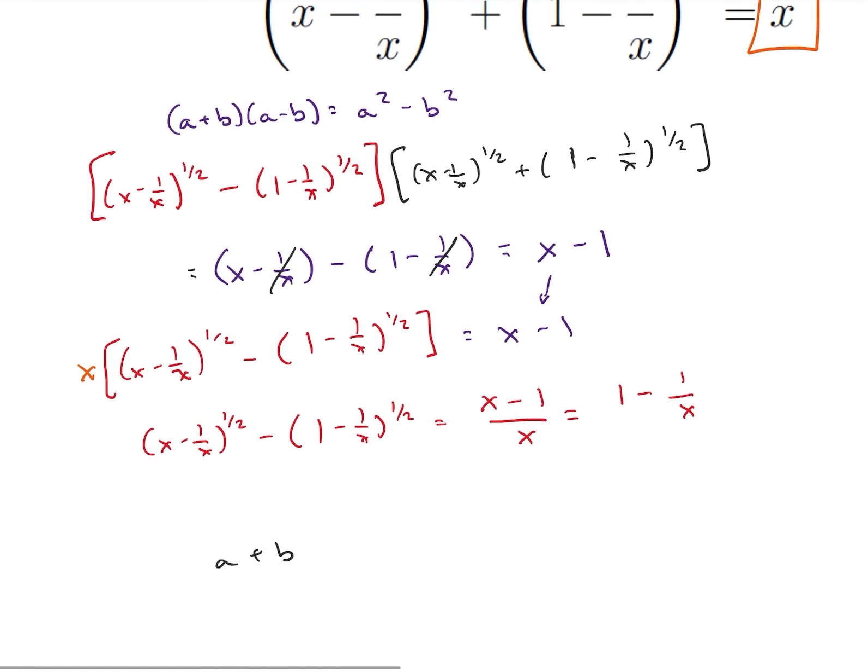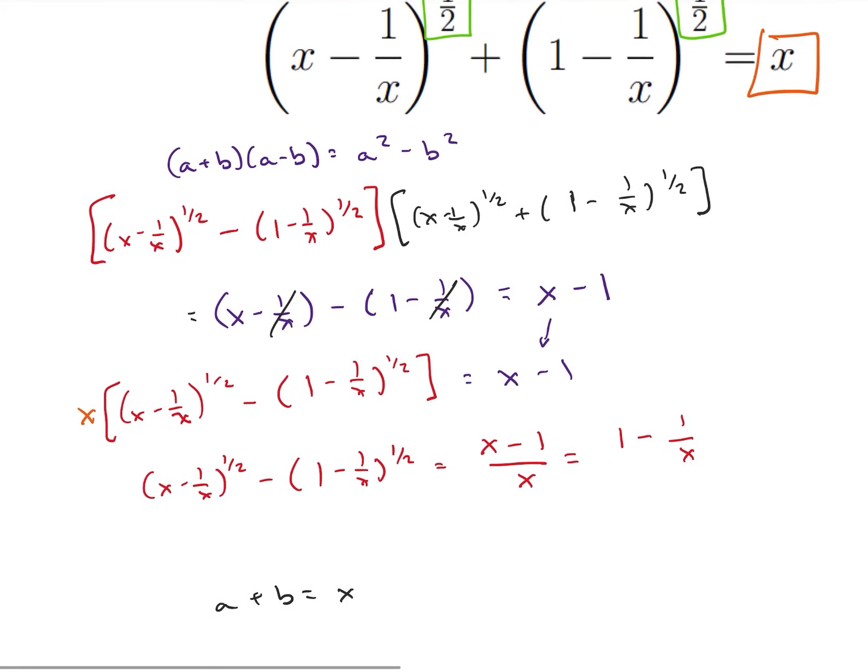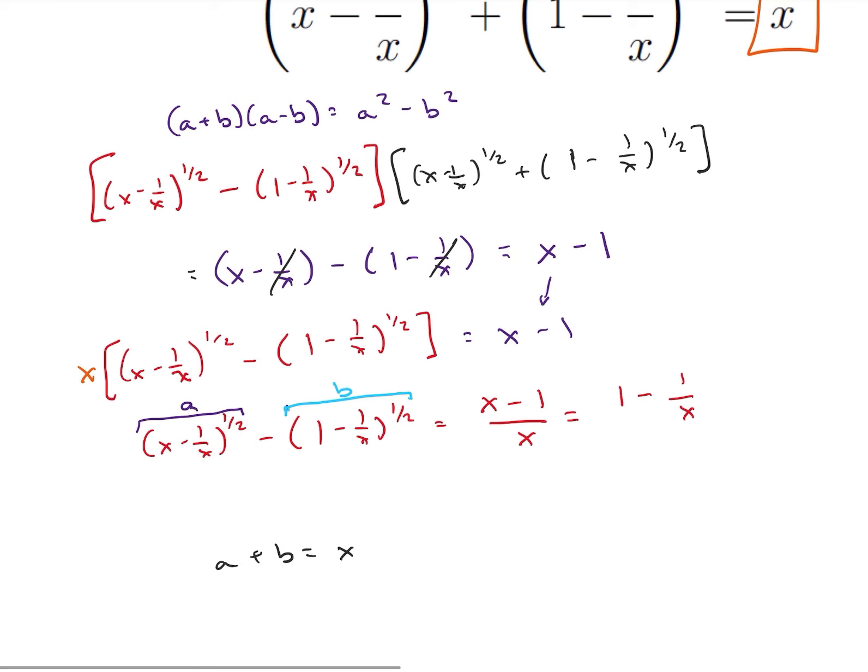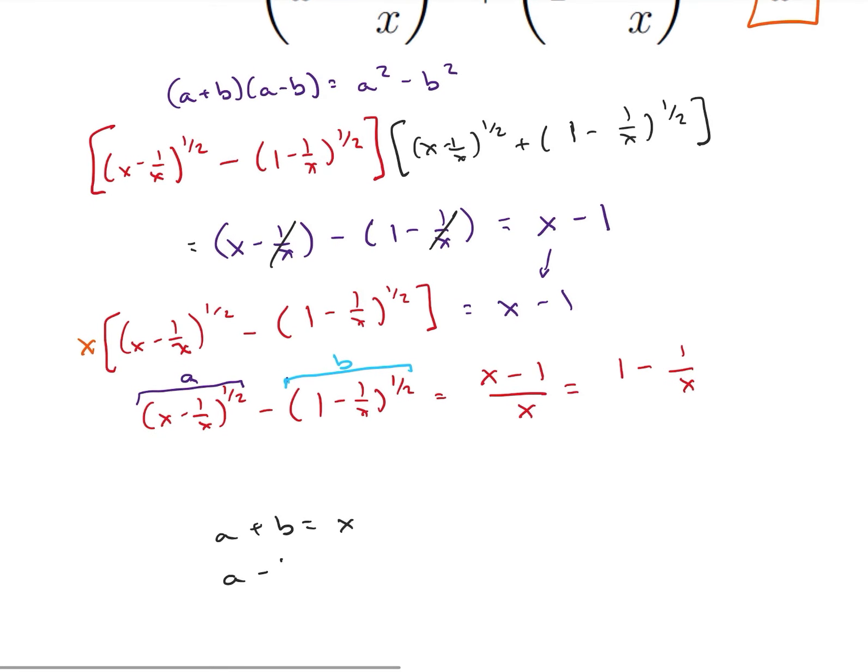So I can see that I have a plus b is equal to x. And if you look down here, I can see that this is also a, and this is b. So, I also have the equation a minus b is equal to 1 minus 1 over x.